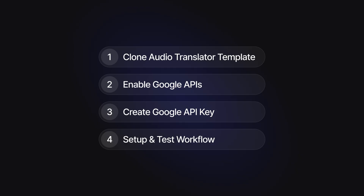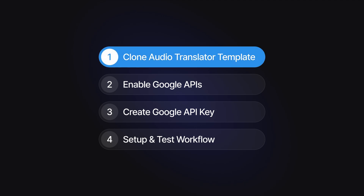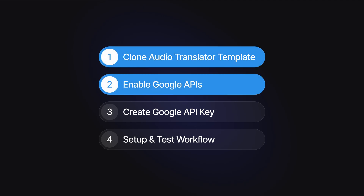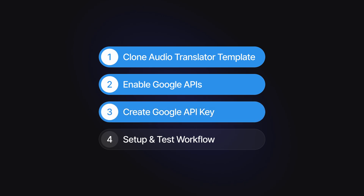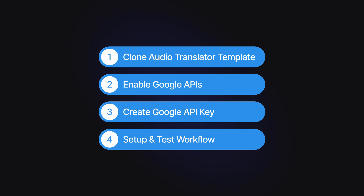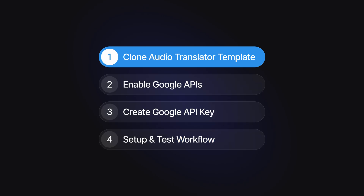In this video, we'll look at cloning the audio translator template in Buildship, enabling the different APIs we'll be using in the Google Cloud console, creating an API key in the Google Cloud console, and finally setting up and testing the workflow. Let's begin.